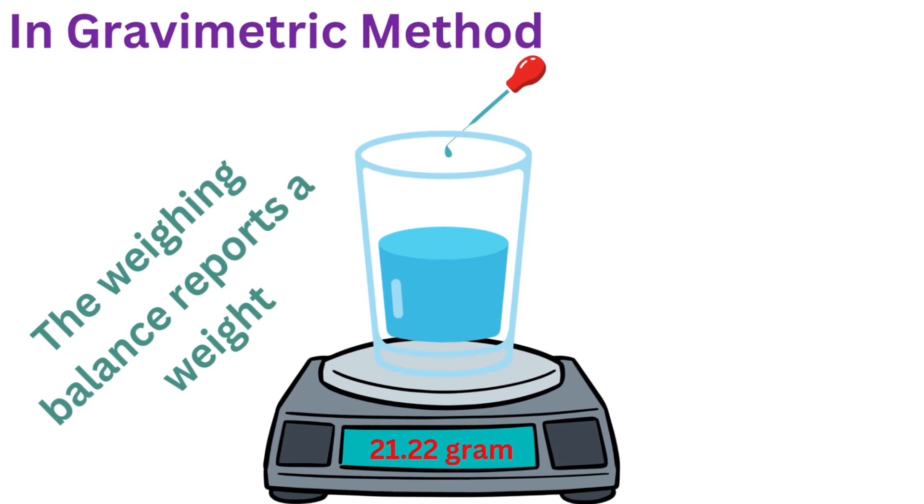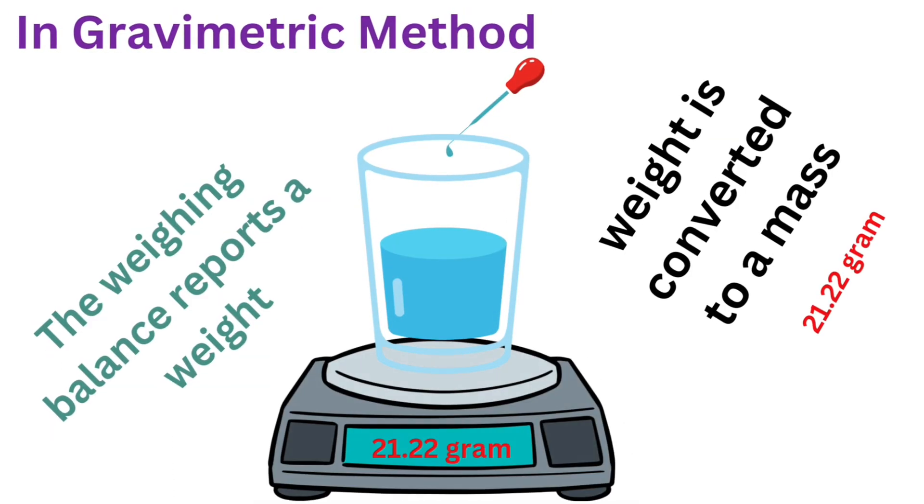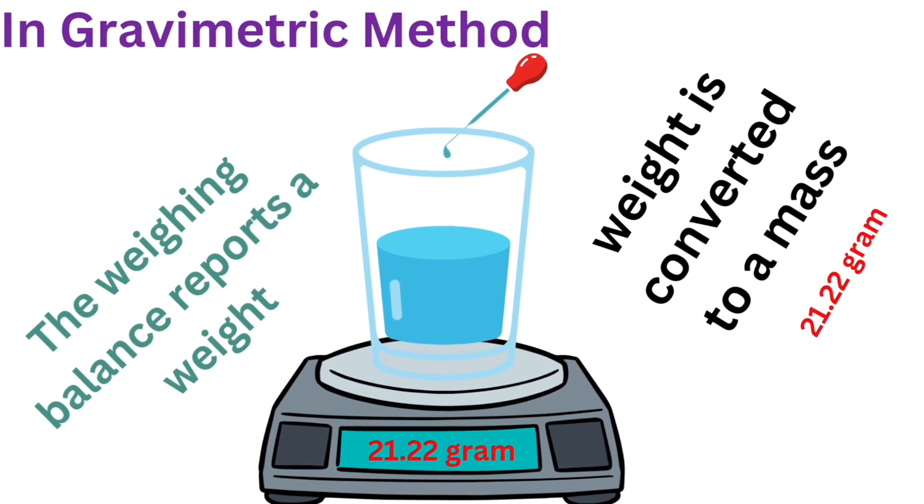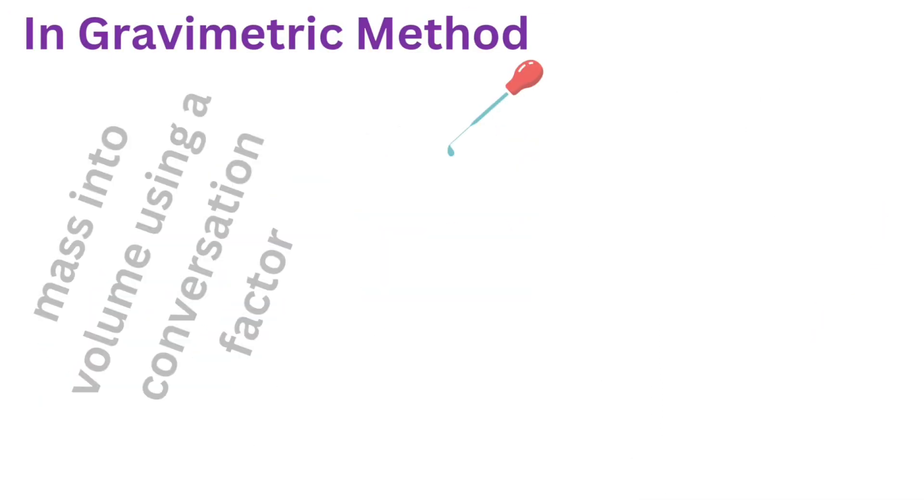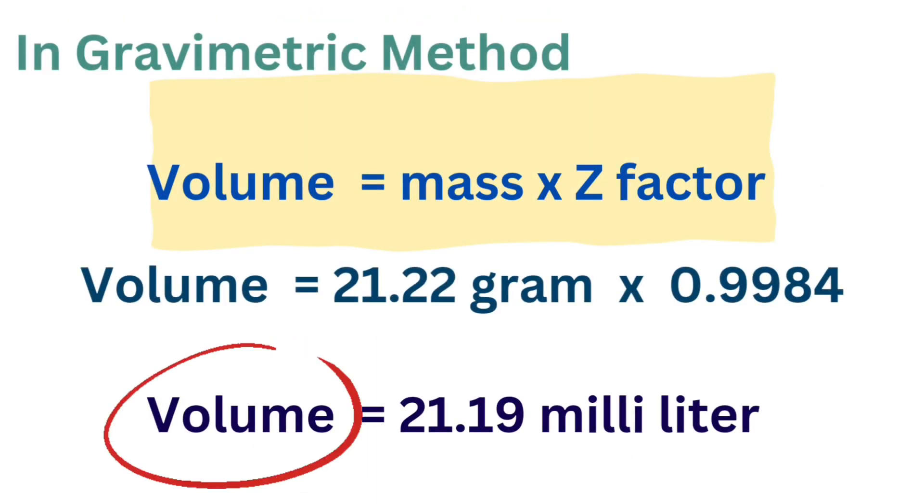The weighing balance reports a weight. Weight is converted to a mass. Mass into volume using a conversion factor. Volume equals mass times Z factor in gravimetric method.